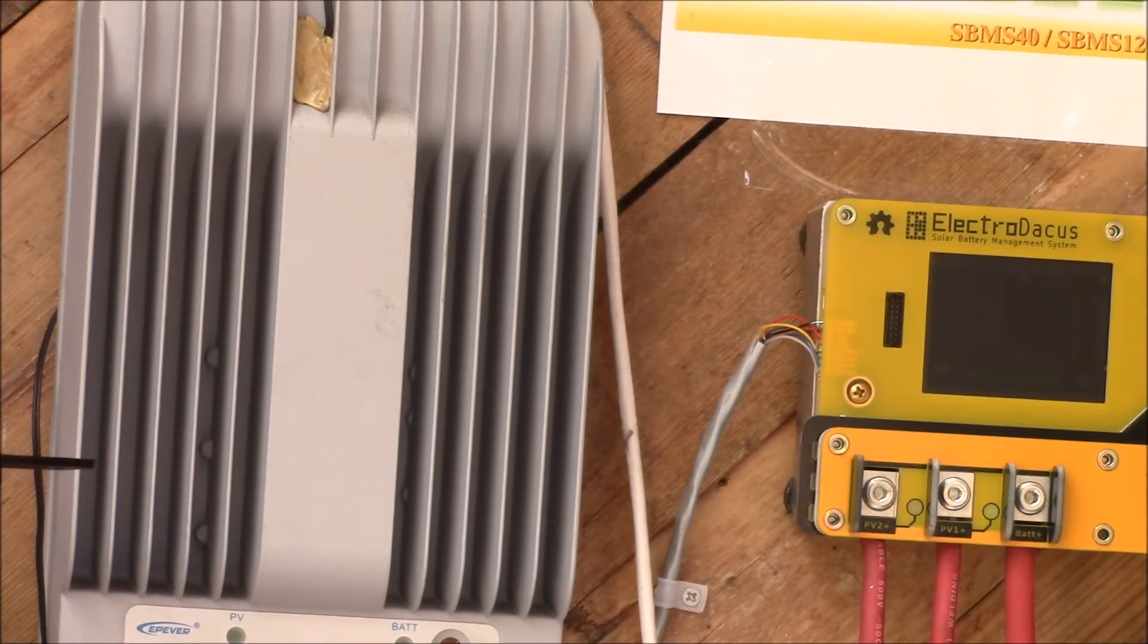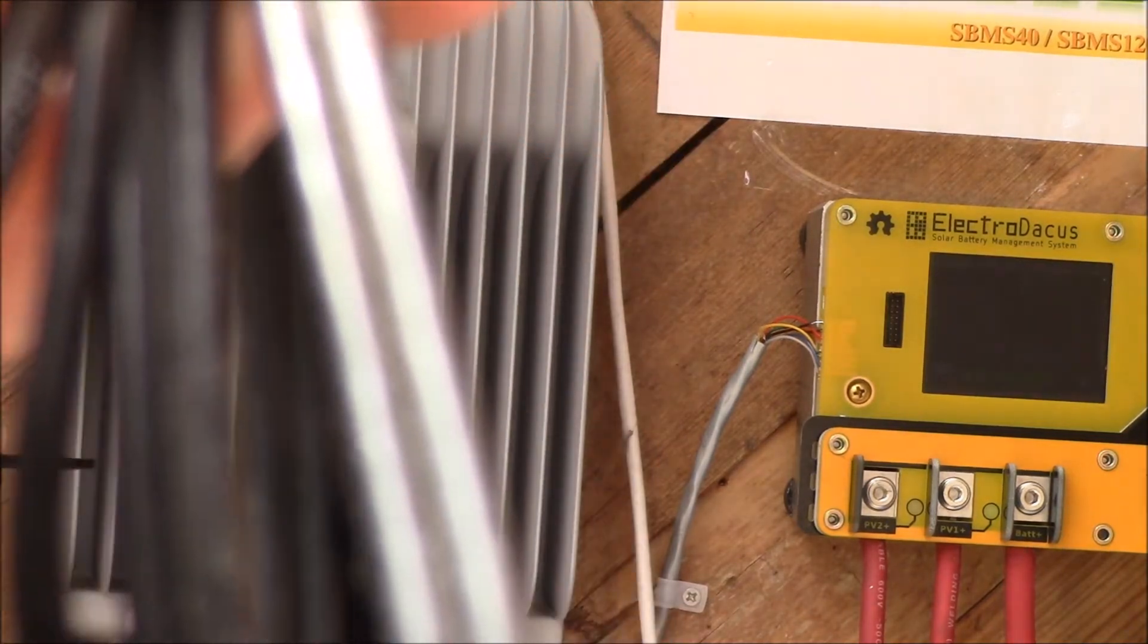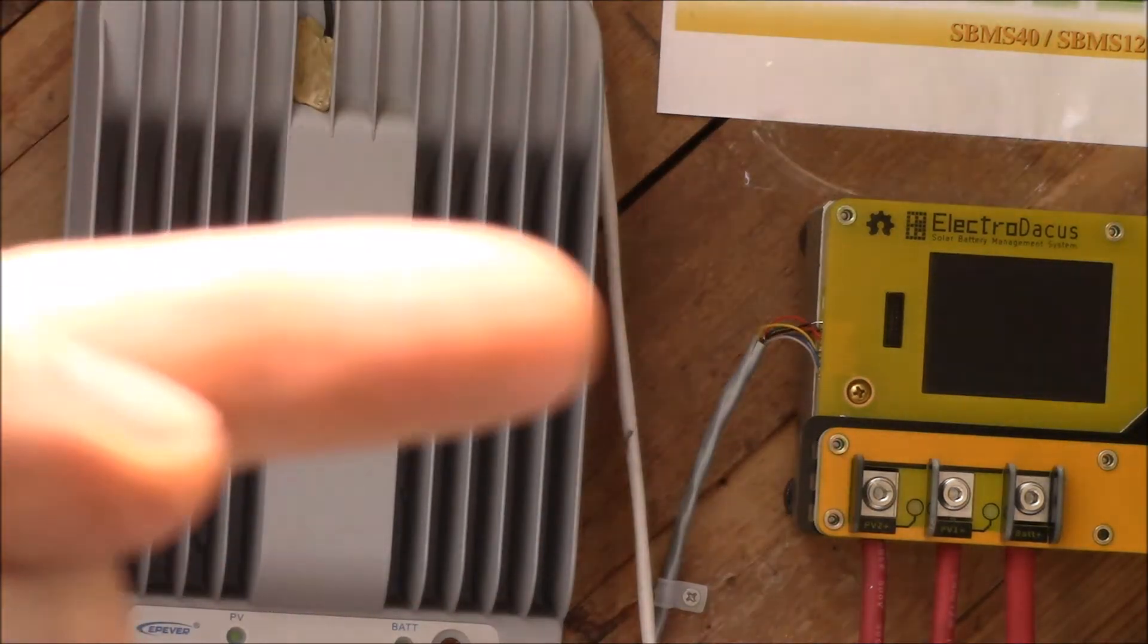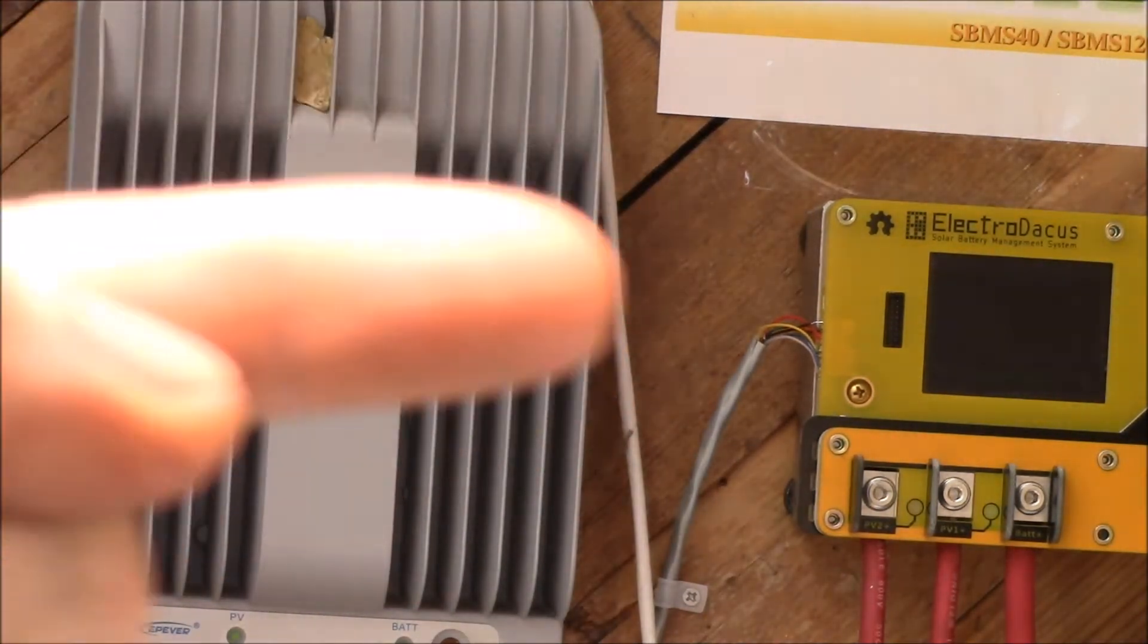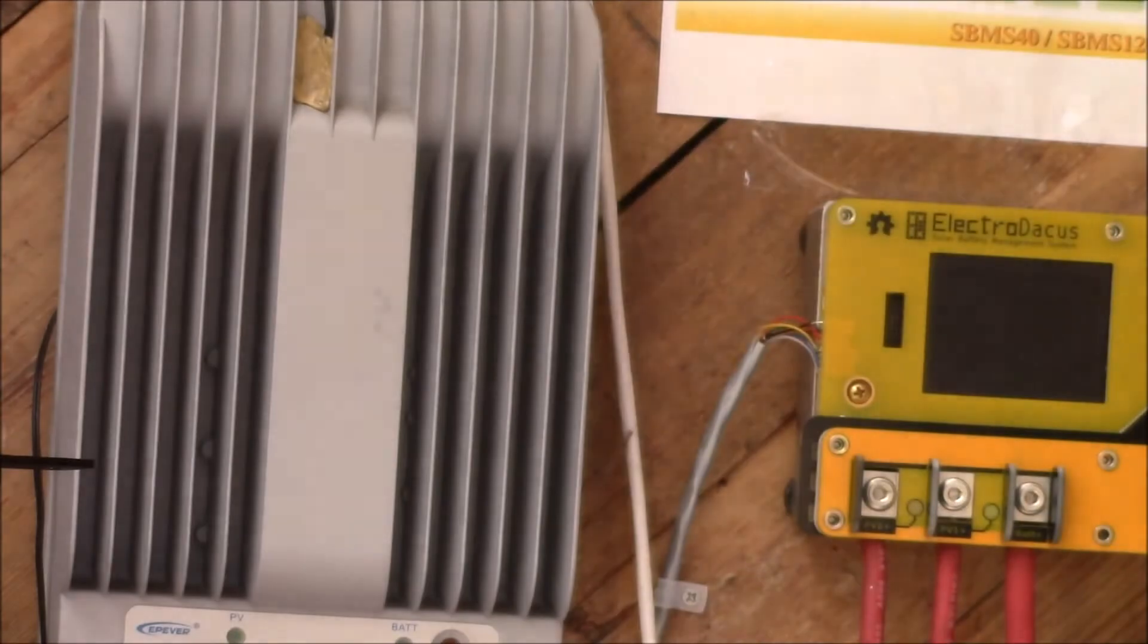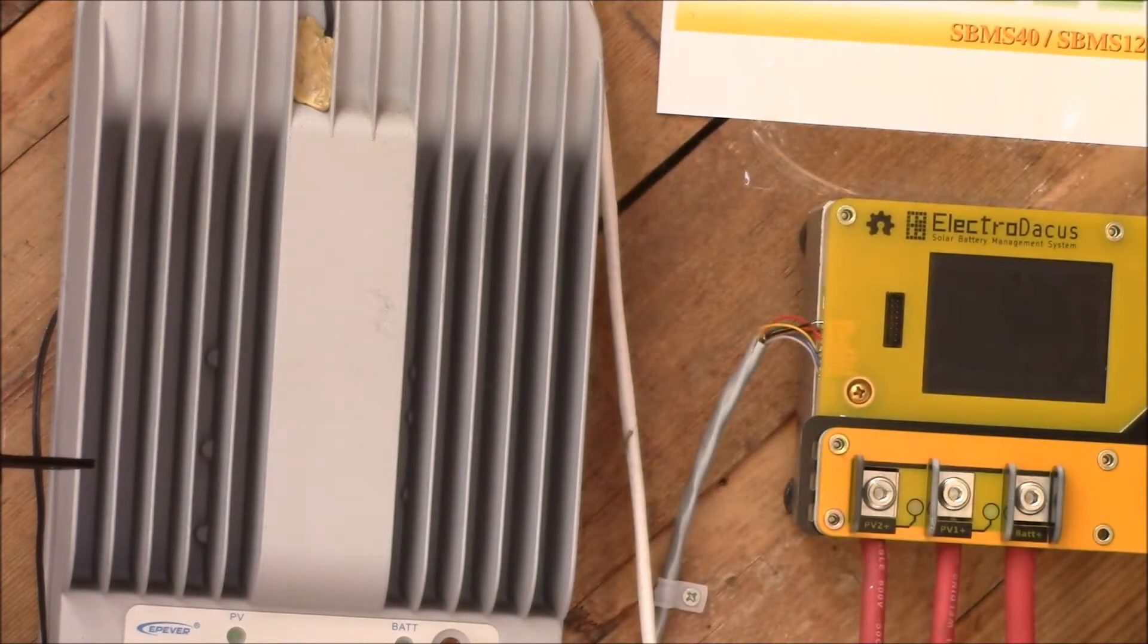If you break that down into ohms per foot you're looking at one milliohm per foot of wire. Most of my wires that run from the fuse box up to the solar panels, the shortest one is about 15 feet and the longest one is about 25 feet. The panels are on a 45 degree angle to the roof.